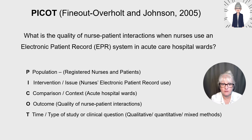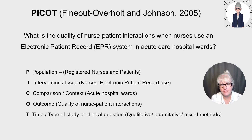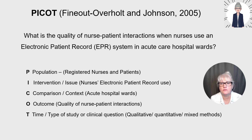P — population is the same as the original PICO: registered nurses and patients. I — intervention, but also issue, so it's slightly broader; my issue is nurses' electronic patient record use, or EPR. C — comparison, but also context; my context is acute hospital wards. O — outcome: quality of nurse-patient interactions. T can link to time, type of study, or the type of clinical question. T is sometimes omitted, which is absolutely fine. I was thinking about the types of studies I was looking at: qualitative, quantitative, mixed method, observational studies.